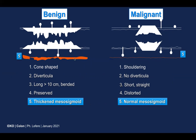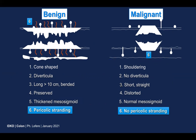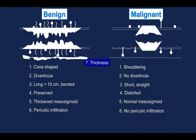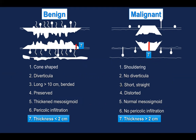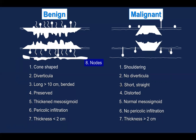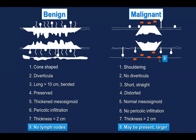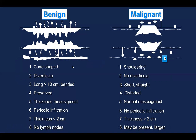Mesosigmoid thickening can occur in benign disease but mostly not in malignant, though it can be present in malignancy. Pericolic fat infiltration may be seen in benign disease, mostly not in malignant, however in case of transmural growth you may have infiltration of the pericolic fat. Wall thickness is generally less in benign disease and thicker in malignant disease. Finally, lymph nodes may be seen in malignancy but mostly not in benign disease, though they may be present. It is very important to look at the combination of signs to make the correct diagnosis.